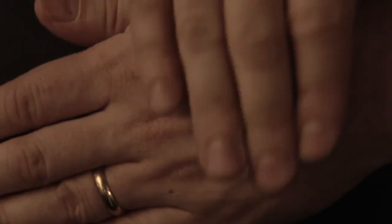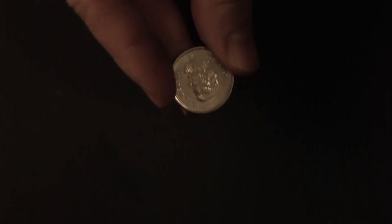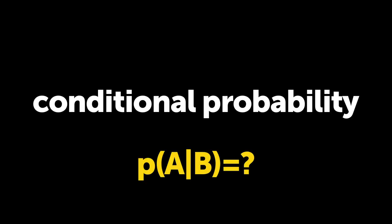Notice our confidence in the fair coin is dropping as more heads occur. Though, realize it will never reach zero. No matter how many flips occur, we can never be 100% certain the coin is unfair. In fact, all conditional probability questions can be solved by growing trees.